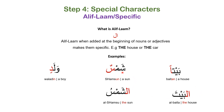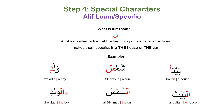Same with 'shamsun' — tanwin, non-specific, meaning 'a sun'; when aleph lam is added it becomes 'al-shamsu', meaning 'the sun'. The double dhamma drops to a single dhamma short vowel when aleph lam is applied. For 'waladin' — double kasra, meaning 'a boy'; with aleph lam it becomes 'al-waladi', meaning 'the boy'. One kasra drops off and we're left with just one, so it's 'al-waladi'.